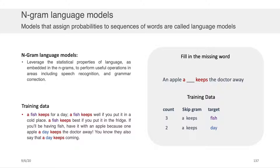On the right-hand side of the screen, 'fish' showed up exactly three times in my training data when my skip-gram was 'a keeps.' Similarly, 'day' showed up twice. So I know that this skip-gram showed up five times — fish showed up 60% of the time (three out of five) and day showed up 40% of the time (two out of five). Therefore, if I had to make a guess, I would probably say the answer is 'fish.' Now, obviously this answer is wrong, and I did that for illustrative purposes to say that when you train a model, it learns based on what you provide it. It doesn't have a special crystal ball — it's just learning based on what you trained it with.